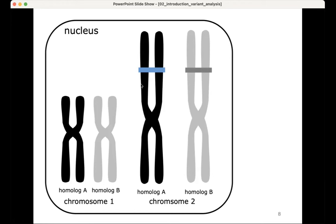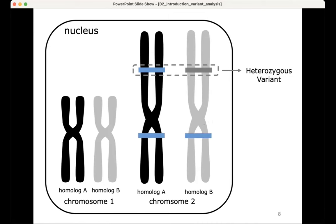Homologous chromosomes have a very similar sequence, but very often there are differences. If there is a difference between them, we call that a heterozygous variant — we have allele A on one homolog and allele B on the other. You can also have homozygous variants: if there is a variant that differs between individuals, but both homologous chromosomes carry the same allele, we call that a homozygous variant.